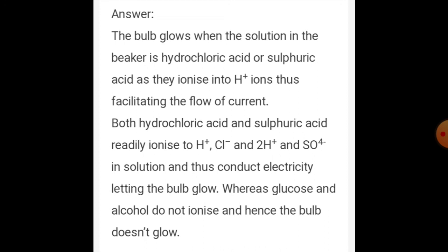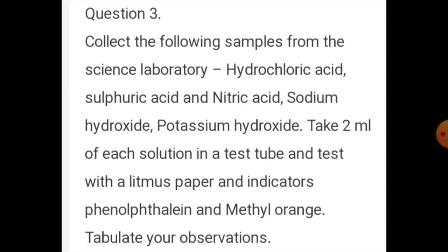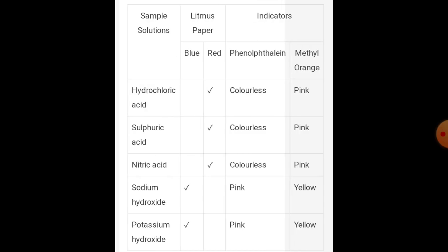Activity three: Select the following samples from the science laboratory — hydrochloric acid, sulfuric acid, nitric acid, sodium hydroxide, potassium hydroxide. Take 2 ml of each in a test tube and test with litmus paper, phenolphthalein, and methyl orange indicators. Tabulate your observations. Do not taste or smell any chemical acid.